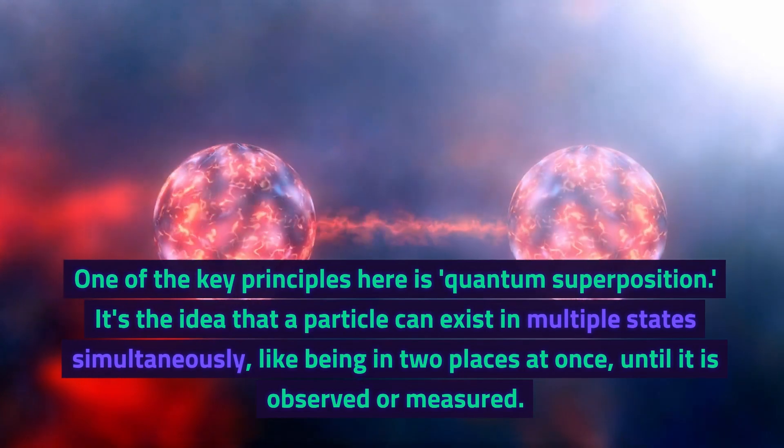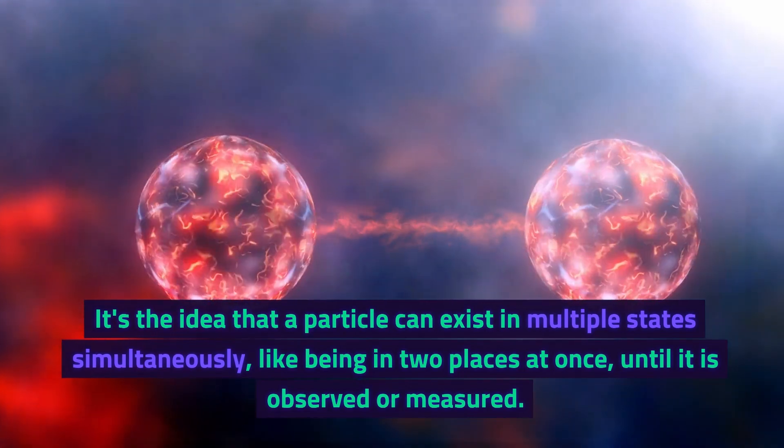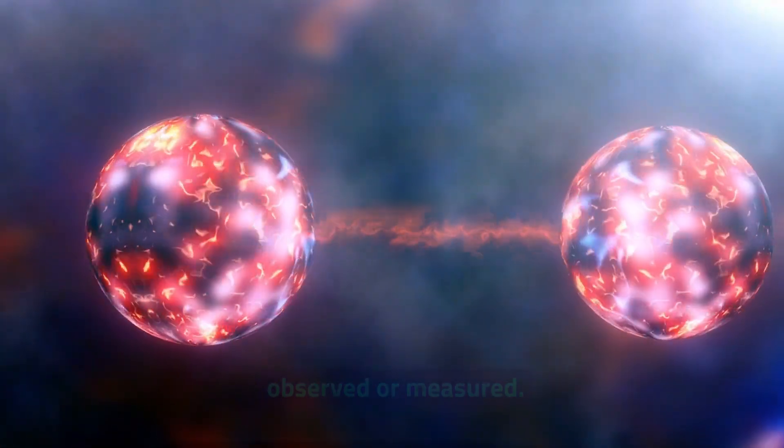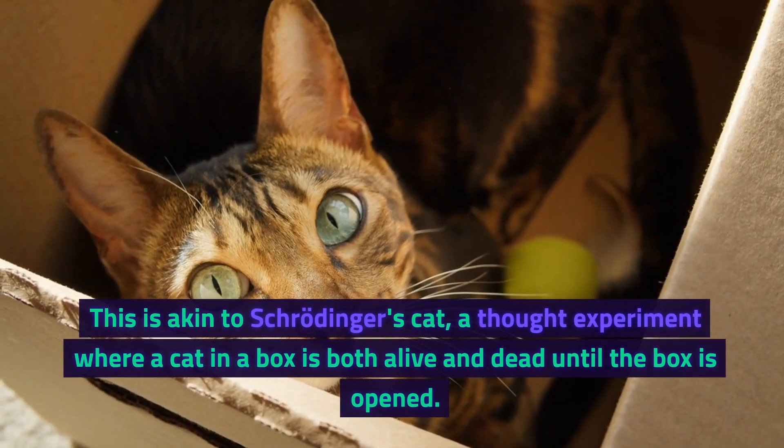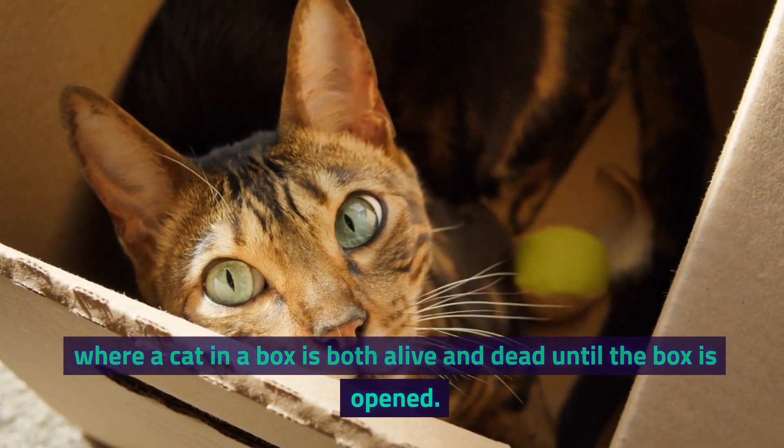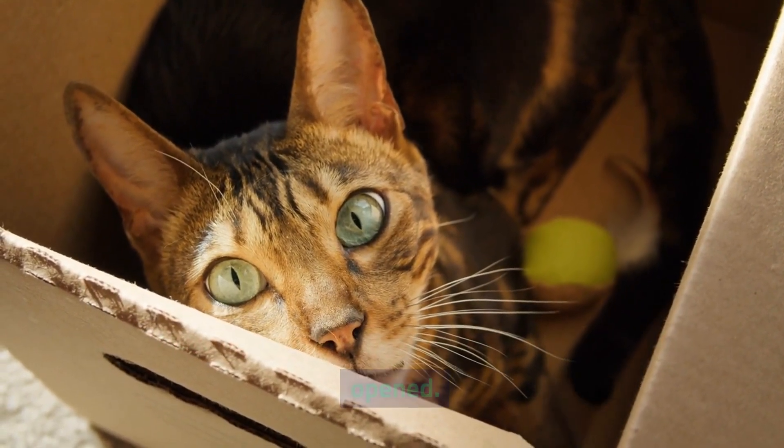One of the key principles here is quantum superposition. It's the idea that a particle can exist in multiple states simultaneously, like being in two places at once, until it is observed or measured. This is akin to Schrodinger's cat, a thought experiment where a cat in a box is both alive and dead until the box is opened.